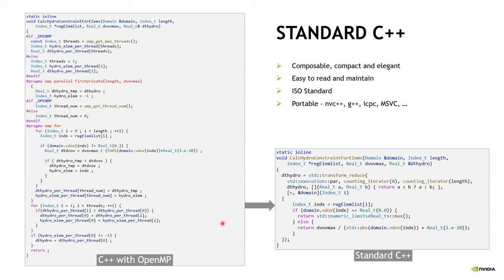We worked with them to restructure the code to use solely standard C++. This function on the left gets transformed into this function on the right — they are accomplishing the exact same thing, but the code is a lot more compact and easier to read and maintain. Here we're using a standard transform algorithm, telling the compiler it can execute this code in parallel, and inside you can see the transformation loop and the reduction loop. Because it is fully ISO standard, it's portable to any compiler that supports ISO C++, and here's a list of several that we've tried it in.